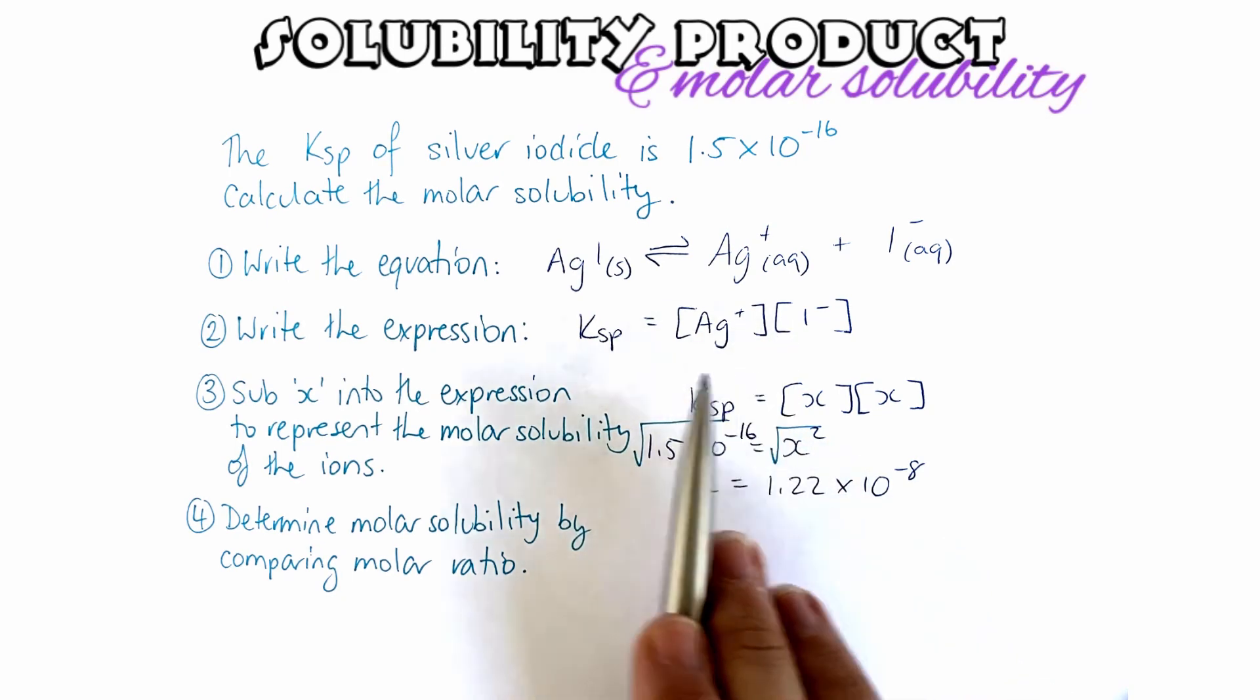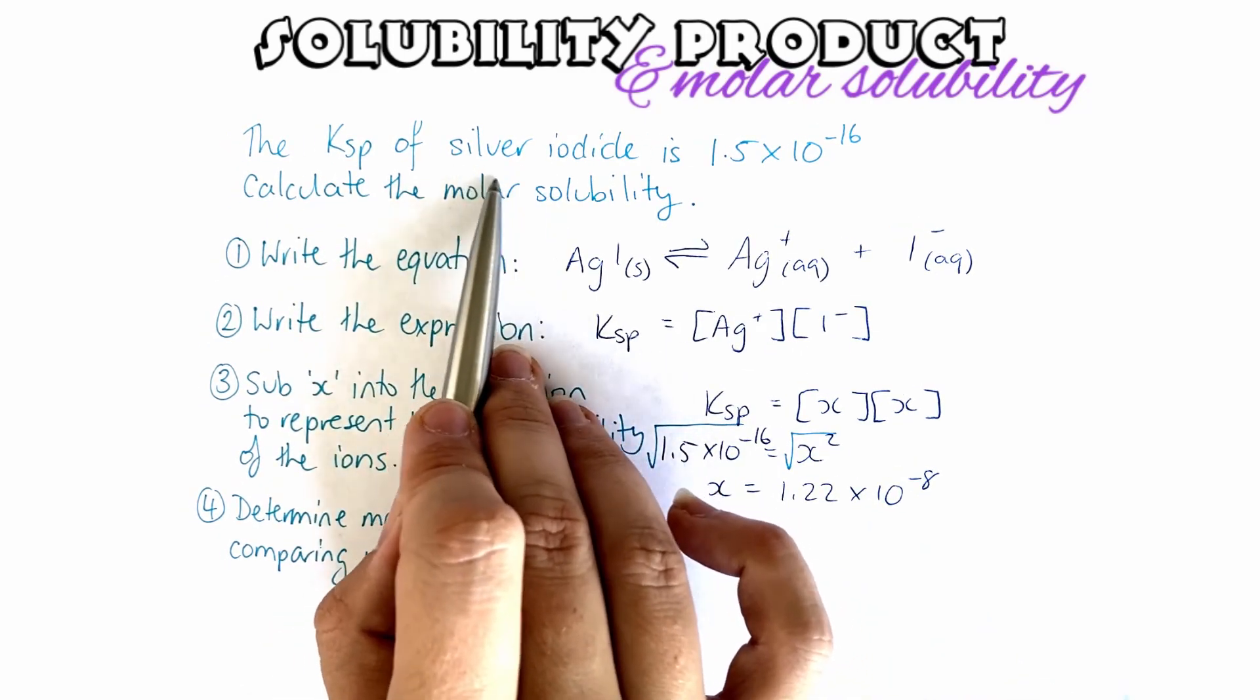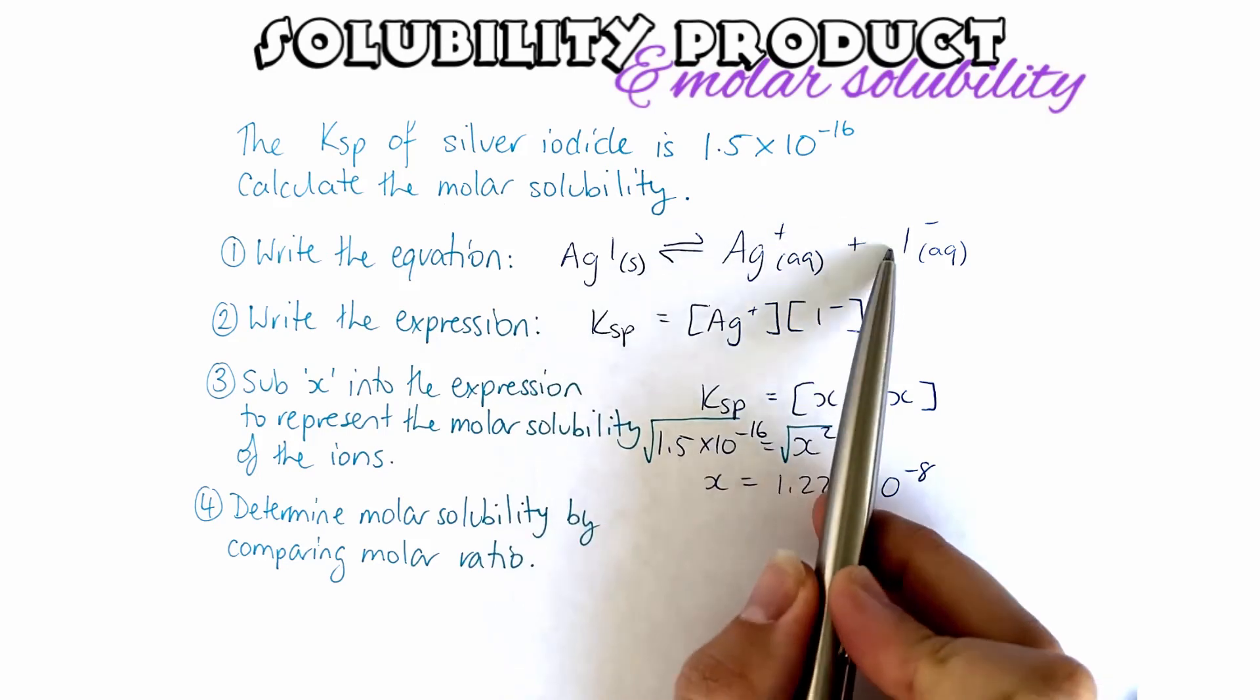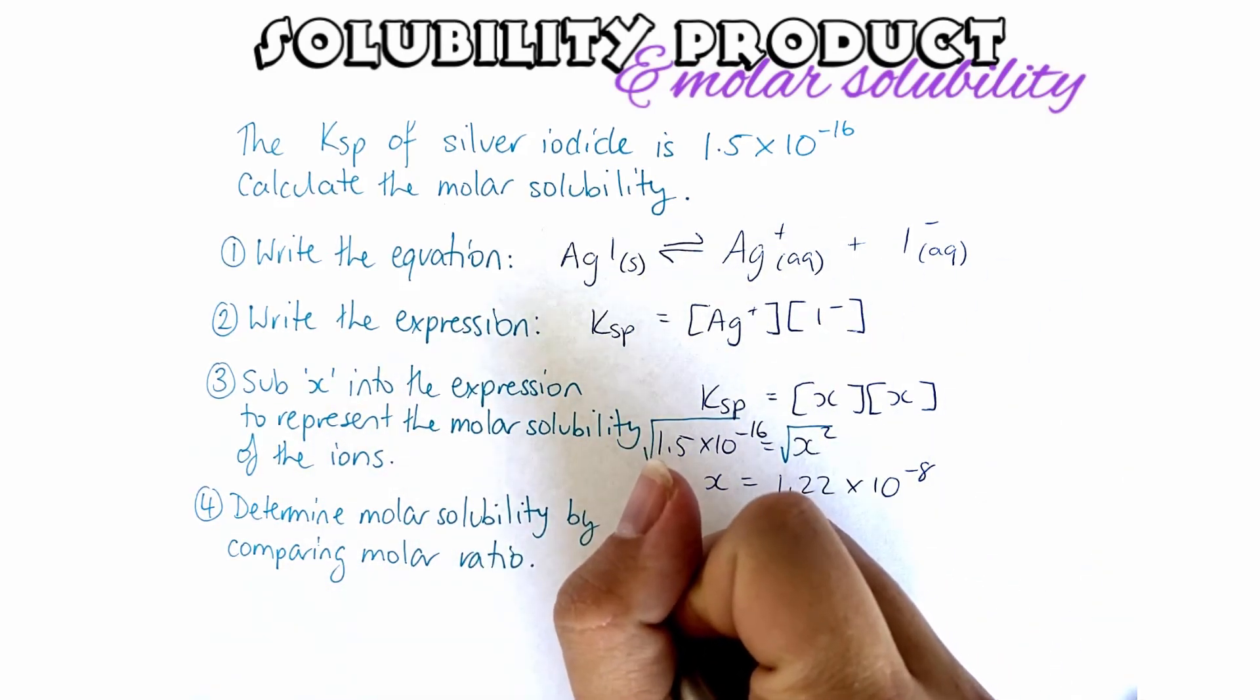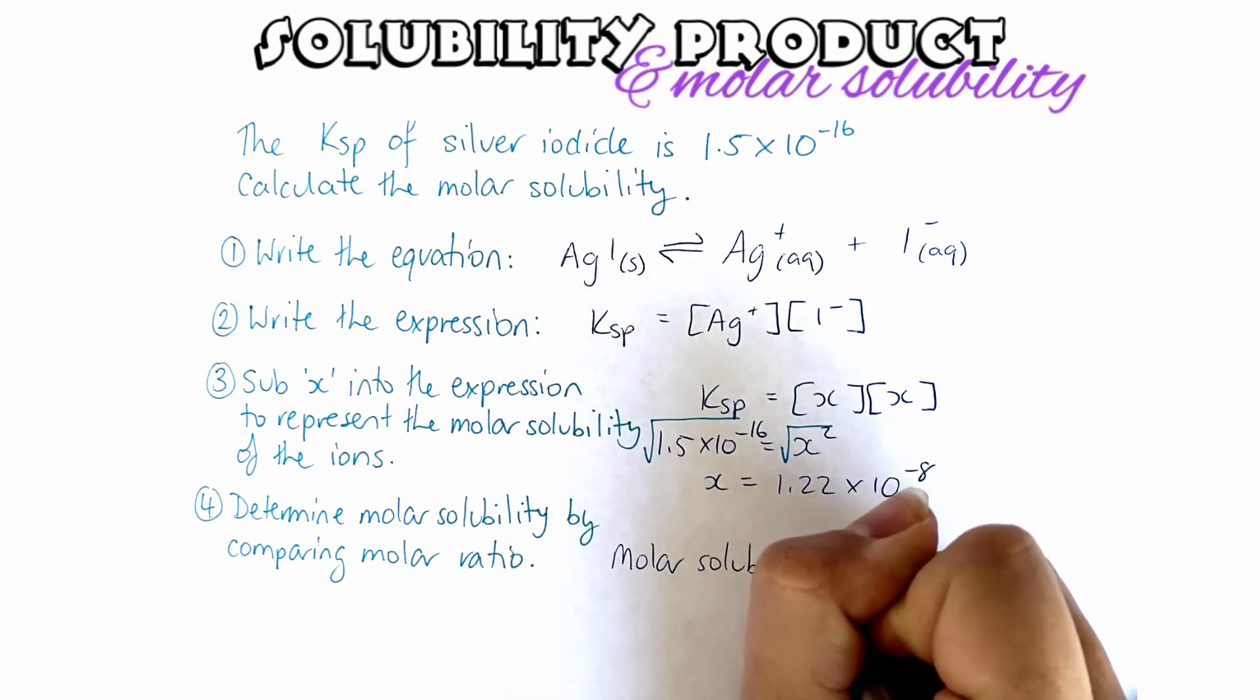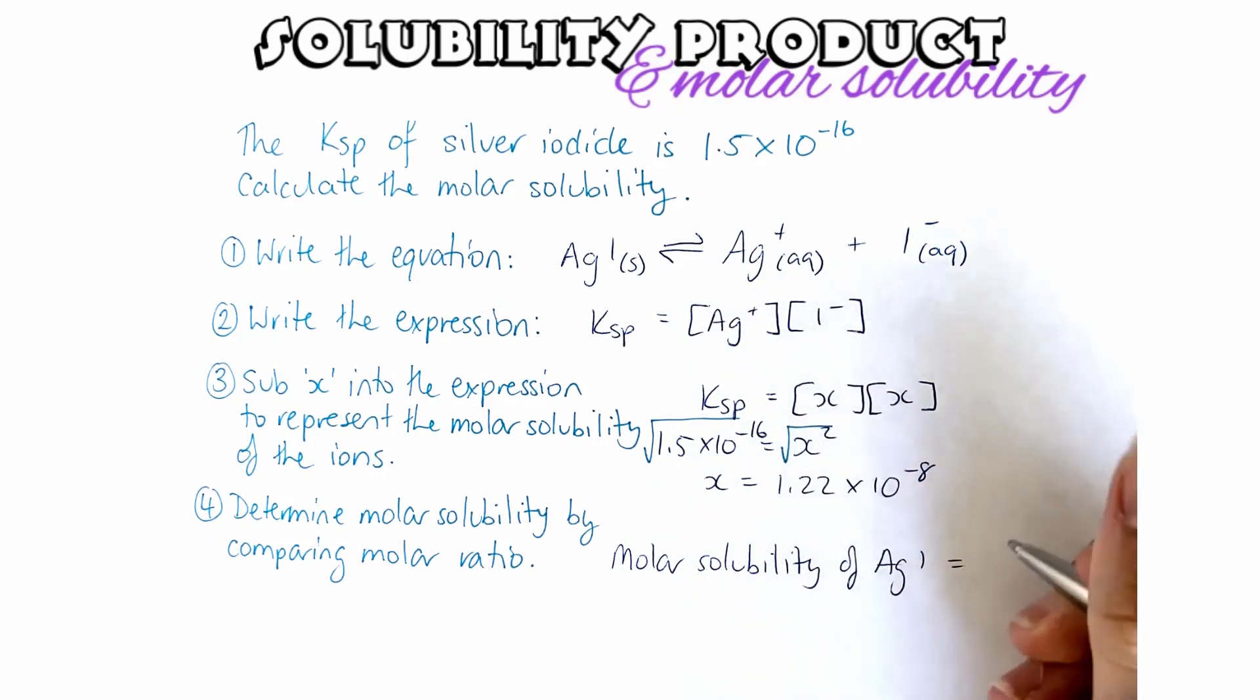But the question is asking us to calculate the molar solubility of the silver iodide. And again, what's the molar ratio between them all? It's one to one to one. So that means that the molar solubility of the silver iodide is 1.22 times 10 to the minus 8.